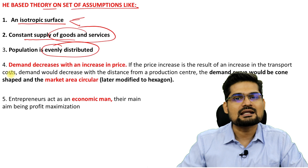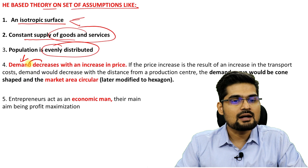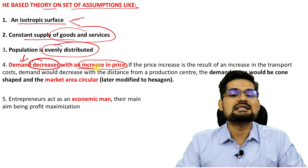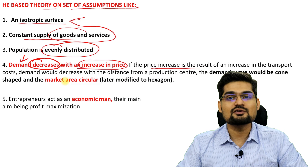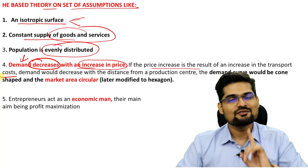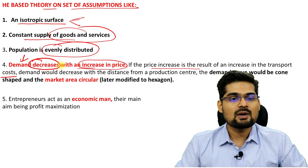The fourth and most important assumption is that demand decreases when price increases. Obviously, when price rises, demand gradually decreases — that is a normal law of economics. This price increase is a result of transportation cost. Right from Von Thünen to Weber to Christaller, transportation cost has been a very important factor. The demand would decrease with distance from the production center.